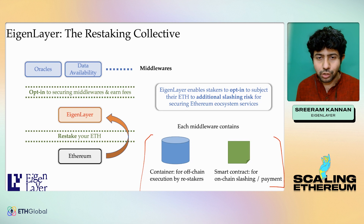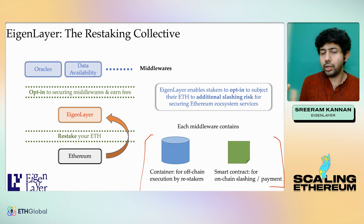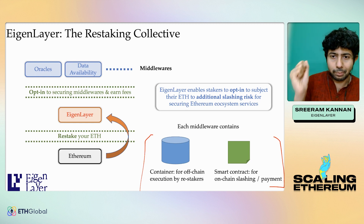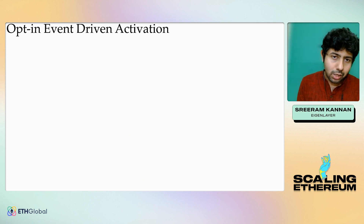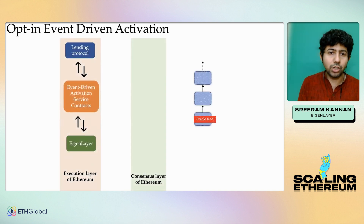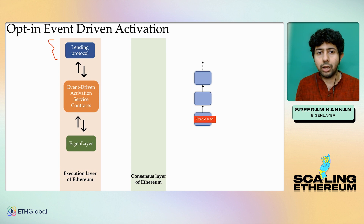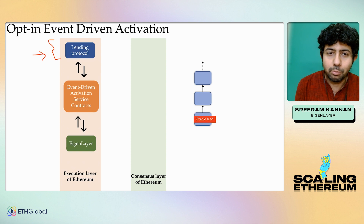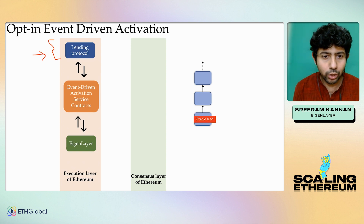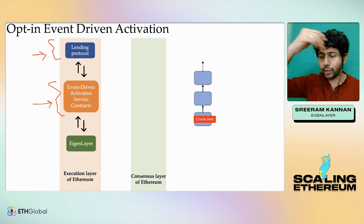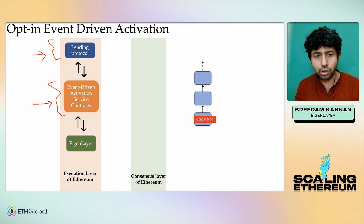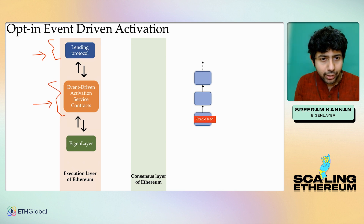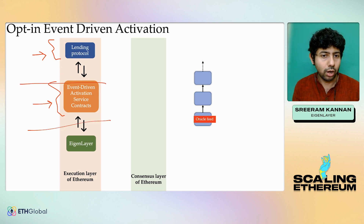For the rest of the talk, I'll give a few examples of what the possibilities are at this interface, and also talk about some negative externalities to think about and mitigate. One example is event-driven activation. Imagine a lending protocol — there's the concept of either refueling your collateral or liquidating somebody. These are event-driven actions: if the state of the Ethereum blockchain is a certain thing, then a certain event needs to be triggered, like a cron job in Linux. Right now, we don't have a native blockchain framework to do this — event-driven activations happen off-chain.